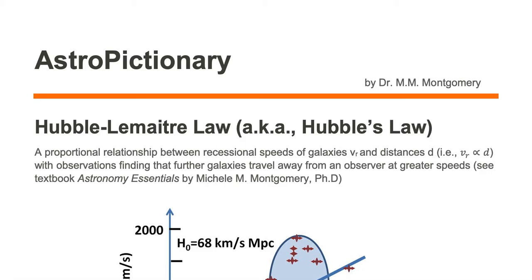The Hubble-Lemaître Law is also known as Hubble's Law. It is a proportional relationship between recessional speeds of galaxies v sub r and distances d, where v sub r is proportional to d, with observations finding that further galaxies travel away from an observer at greater speeds.